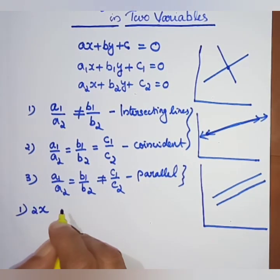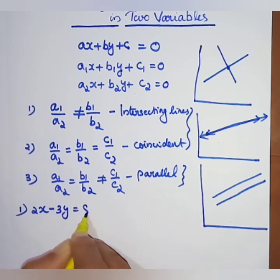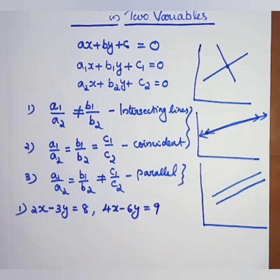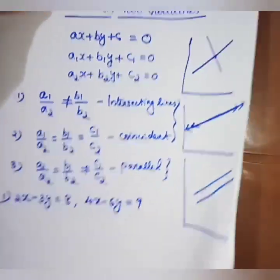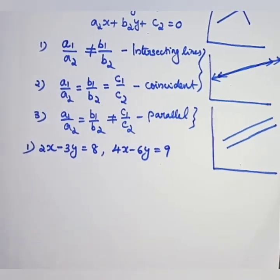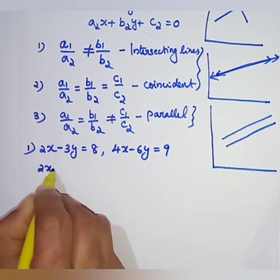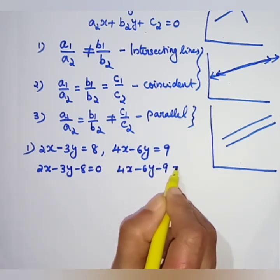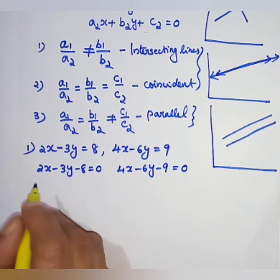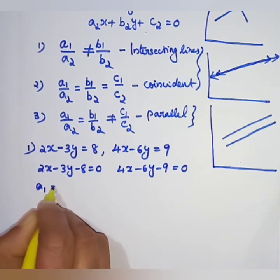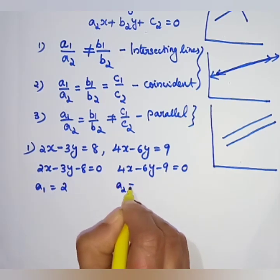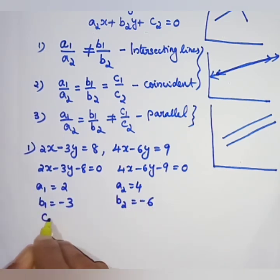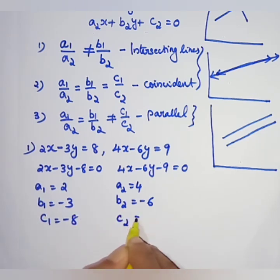Example: The first equation is 2x − 3y = 8, which gives 2x − 3y − 8 = 0. The second equation is 4x − 6y = 9, which gives 4x − 6y − 9 = 0. So a1 = 2, a2 = 4, b1 = −3, b2 = −6, c1 = −8, c2 = −9.